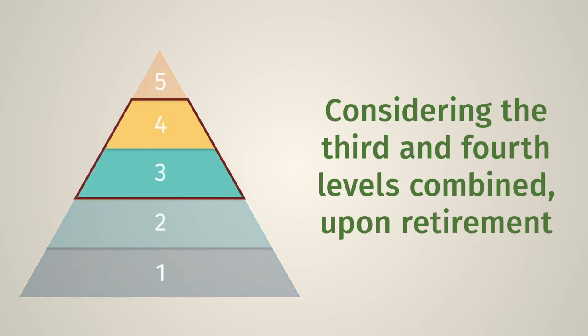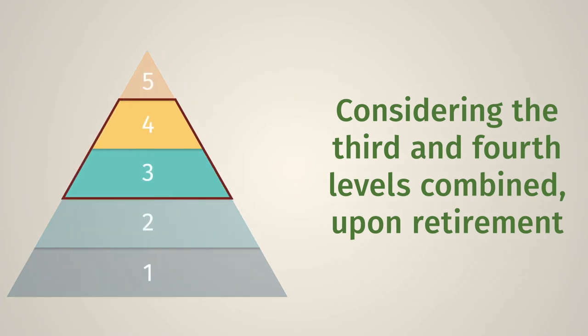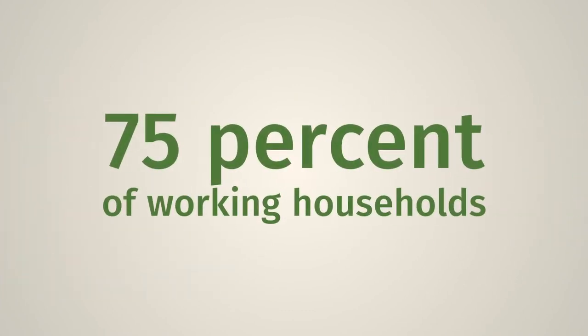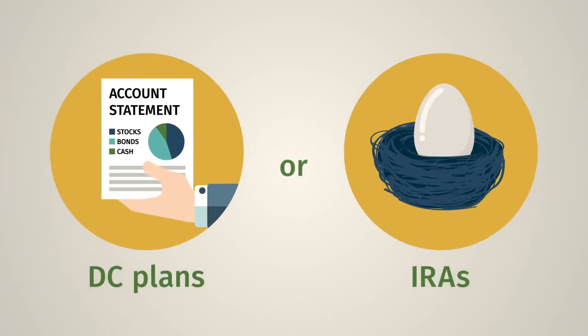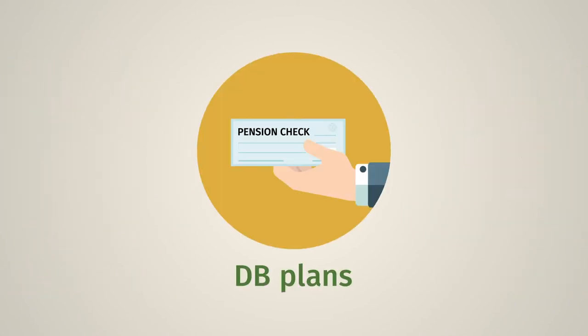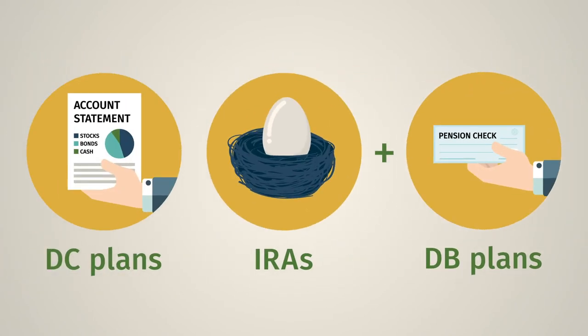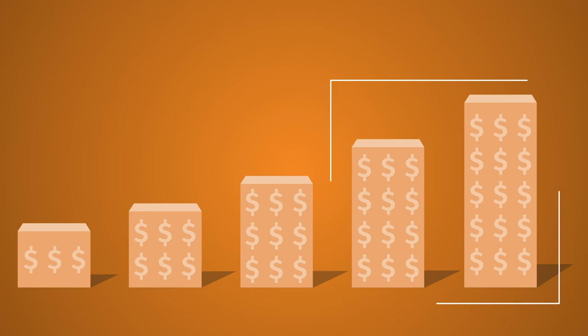Considering the third and fourth levels combined, upon retirement 75 percent of working households have accumulated assets in DC plans or IRAs, accrued benefits in DB plans, or both. The top level of the pyramid, which is typically the smallest for all but the highest income households,